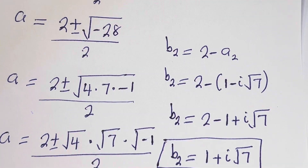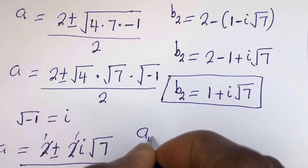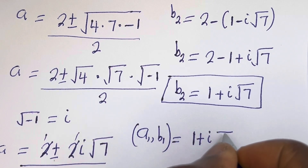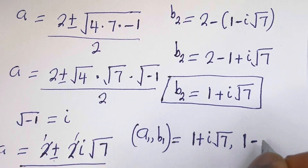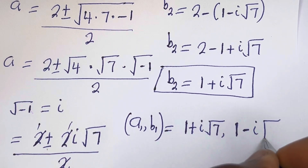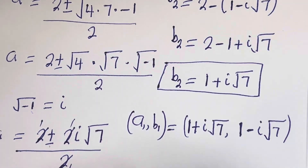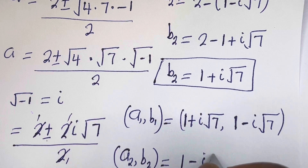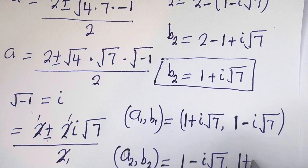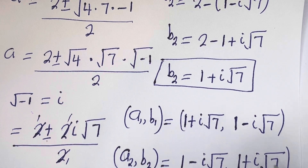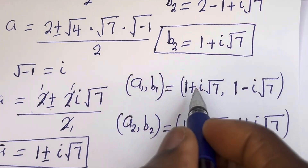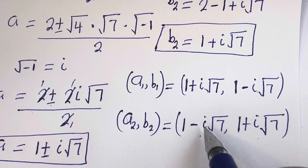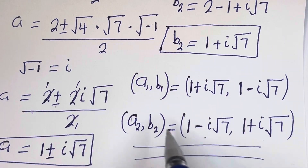Therefore our final answers are: (a1, b1) is equal to (1 plus i square root of 7, 1 minus i square root of 7), and (a2, b2) is equal to (1 minus i square root of 7, 1 plus i square root of 7). You can see that the value of a1 equals the value of b2, and the value of b1 equals the value of a2. I hope you enjoy the video. Thank you for watching. Please don't forget to like, share, comment, and subscribe to my channel.